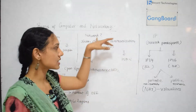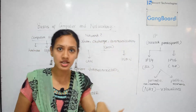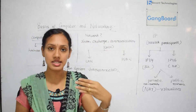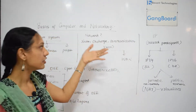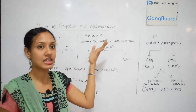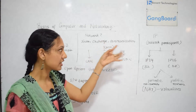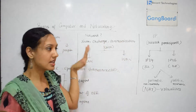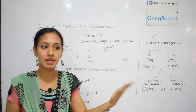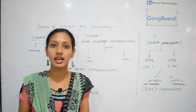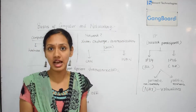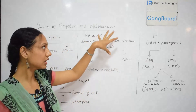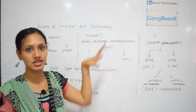Let's see what is a network. A network is a group of computers connected with each other for sharing resources, exchanging information, and for communication purposes. Sharing resources means, for example, many computers together sharing a common printer. That's how a network is designed.